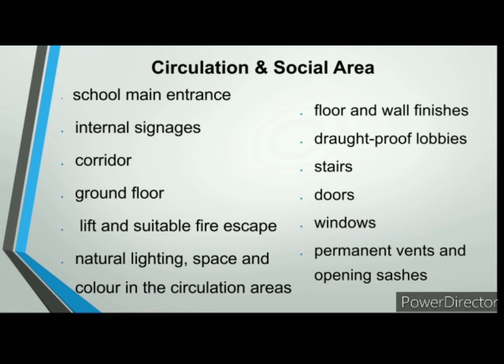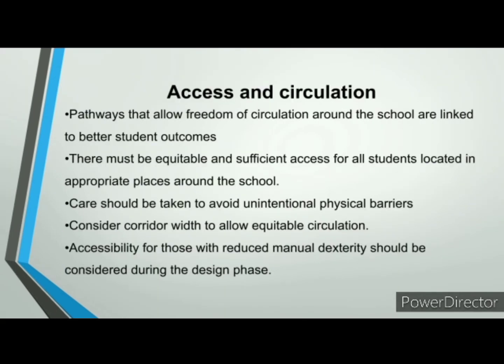Permanent vents and opening sashes should exceed the current guidelines set out in the Technical Guidance Documents to the Building Regulations; roof lights may be considered. Pathways that allow freedom of circulation around the school are linked to better student outcomes, although this finding is not consistent across all studies.